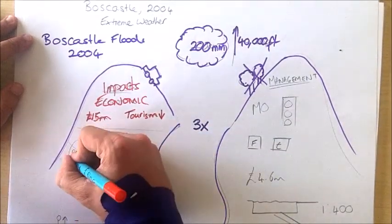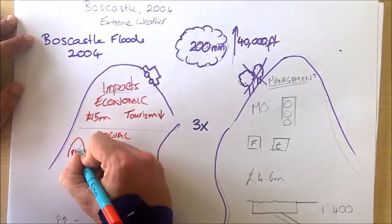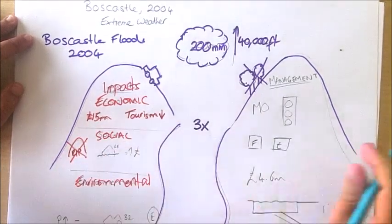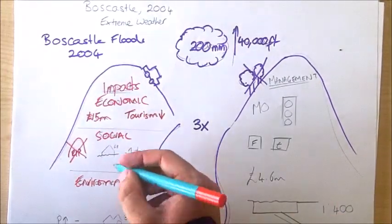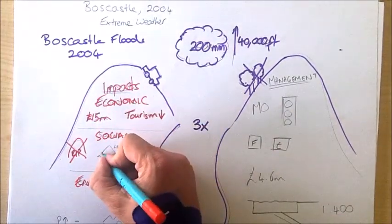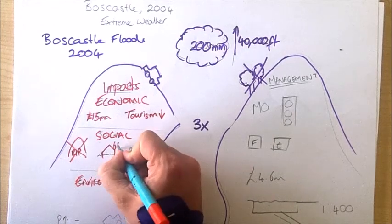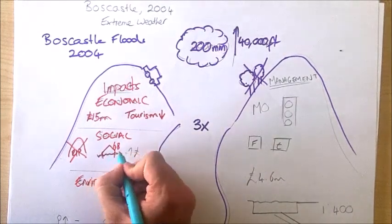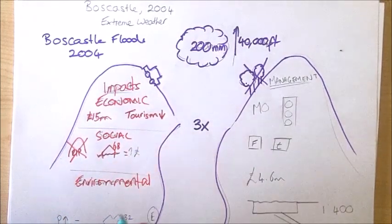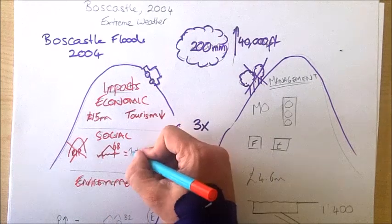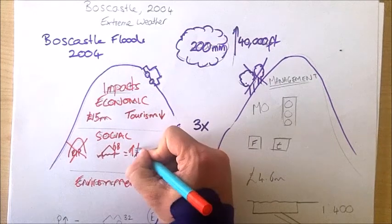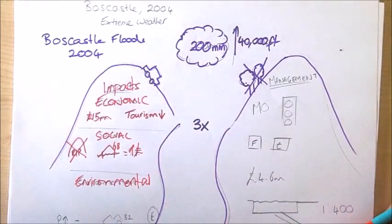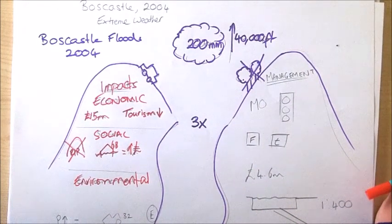In terms of social impacts, fortunately, there were no deaths in Boscastle, although there was huge economic damage. We talked about properties being damaged. In total, over 68 different buildings and homes were flooded. This also resulted in people losing their homes and belongings, but also resulted in an economic impact of an increase in insurance prices, as most companies were unwilling to give insurance to people living in the village.